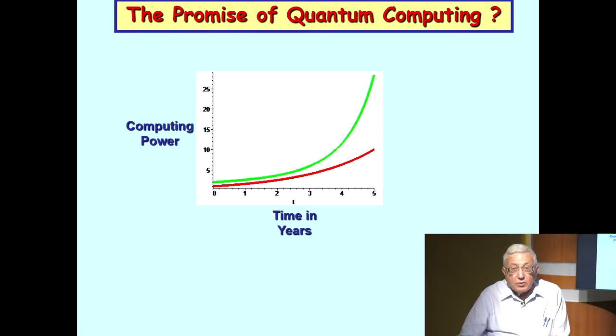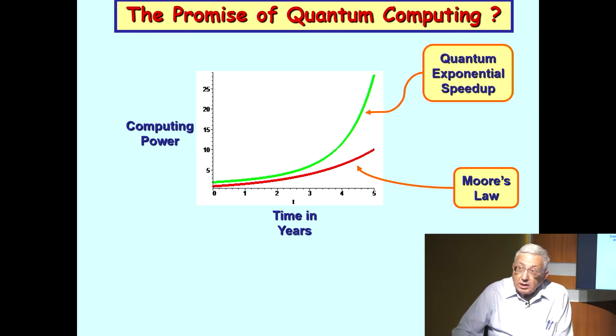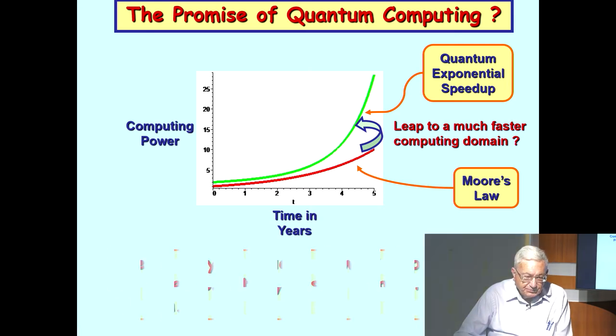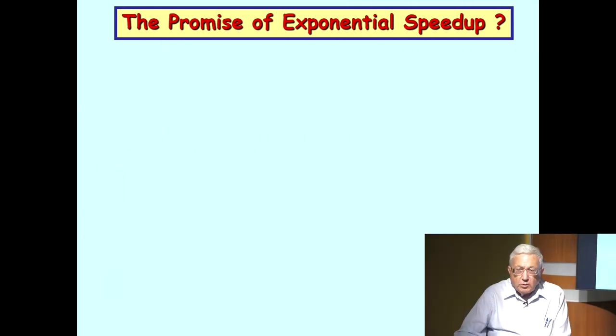So what's the promise of quantum computing? Moore's Law has been essentially almost doubling the computing power every year and a half for half the price and half the size. This law is soon to end, and what we're hoping is that a new curve will appear on the horizon, the exponential curve of quantum speedup. This is a leap to a much faster computing domain. We're trying to leap to what appears to be an extraordinary faster computing world.